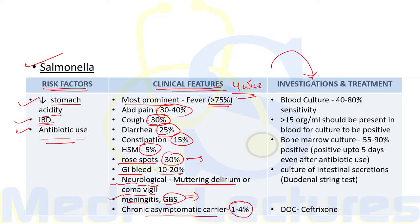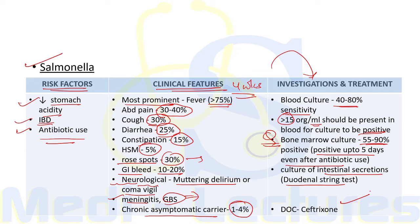For Salmonella investigations: blood culture has sensitivity of 40–80 percent; more than 15 organisms per ml of blood must be present for a positive culture. Bone marrow culture has sensitivity of 55–90 percent and remains positive up to five days even after antibiotic use — the most important investigation. Culture of intestinal secretions can be done by duodenal string test, where a string attached to a weight inside a gelatin capsule is swallowed and retrieved from the duodenum for culture. Drug of choice for Salmonella is ceftriaxone.